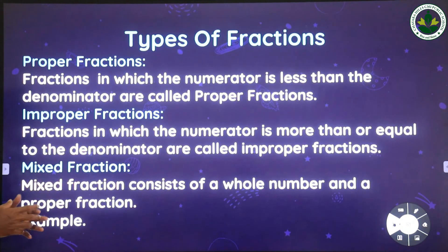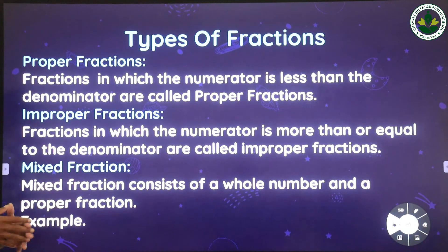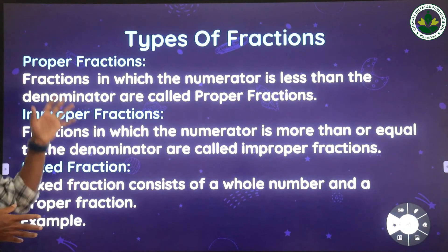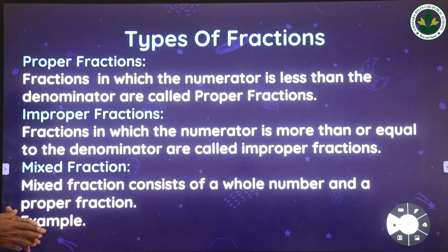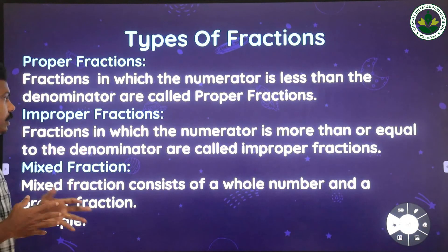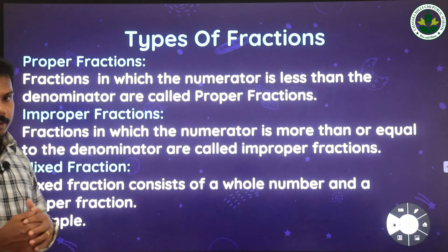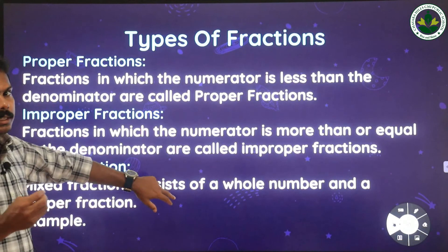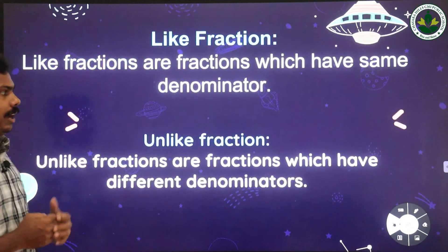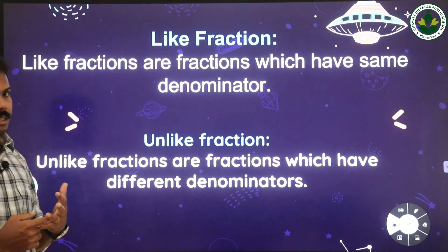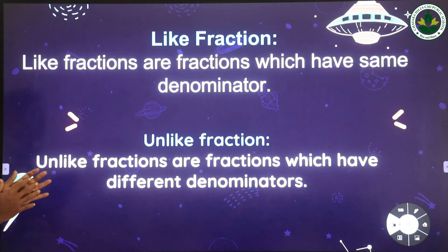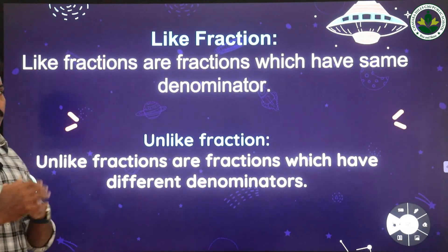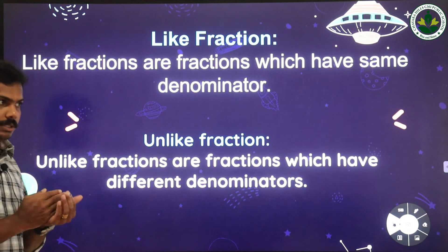The third type is a mixed fraction. A mixed fraction consists of a whole number and a proper fraction. So the three types are: proper fraction, improper fraction, and mixed fraction. We have also discussed like fractions and unlike fractions.